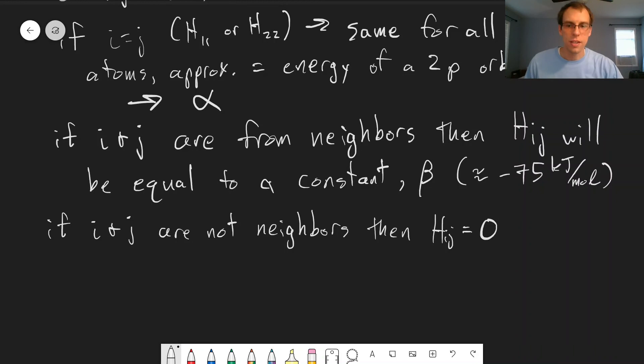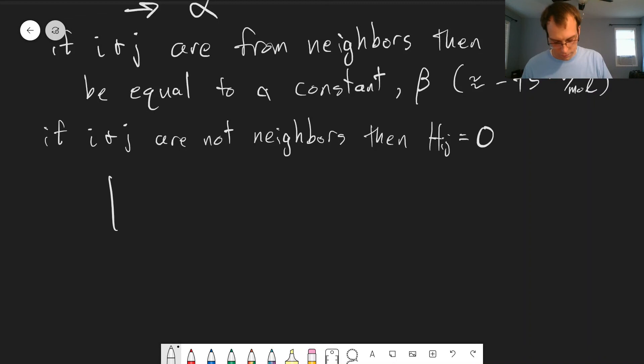So if we want to rewrite the secular determinant using these assumptions for ethylene we'll have alpha minus e, our cross terms will be beta and another alpha minus e equals 0. And in the next video we'll look at solving this determinant.